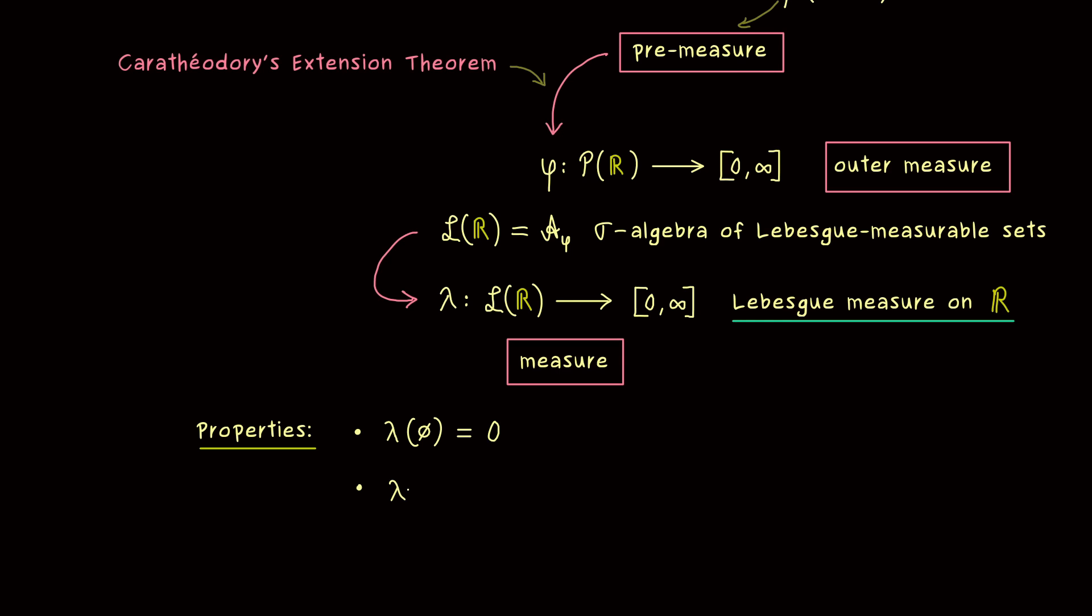The meaning of that is, if we put in a countable union into lambda, then a sum or series comes out. More precisely, we have j goes from 1 to infinity and we have lambda of aj. And of course, we need some requirements for these sets aj. First, they need to be Lebesgue measurable, so they come from our sigma algebra. This makes sense, because otherwise we could not put them into our measure at all.